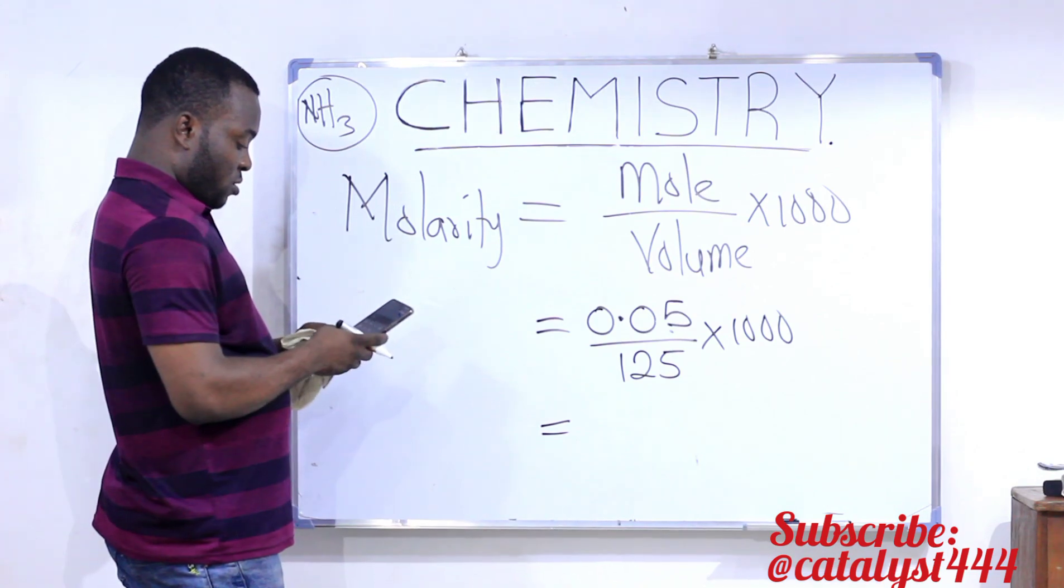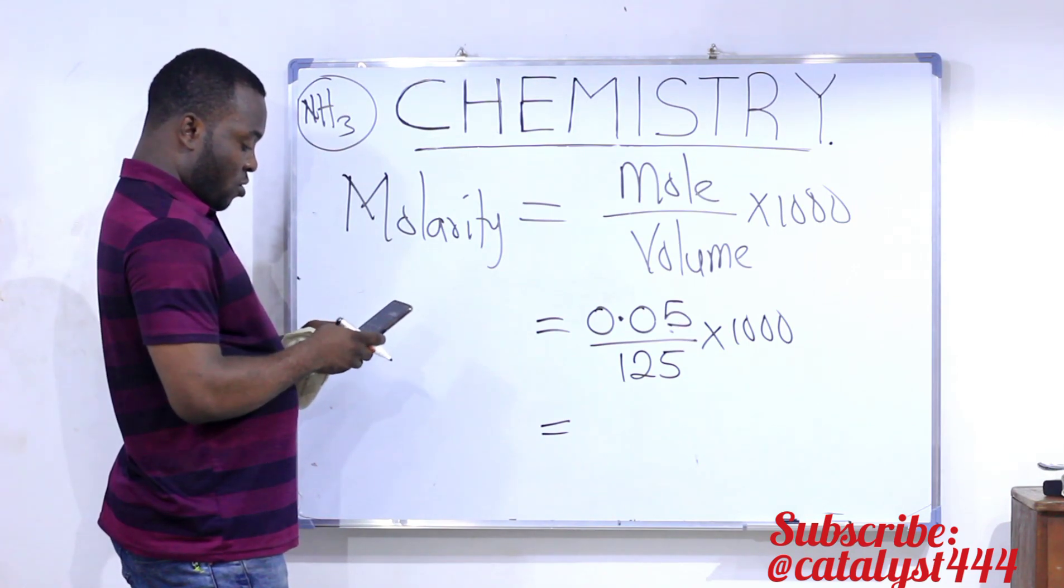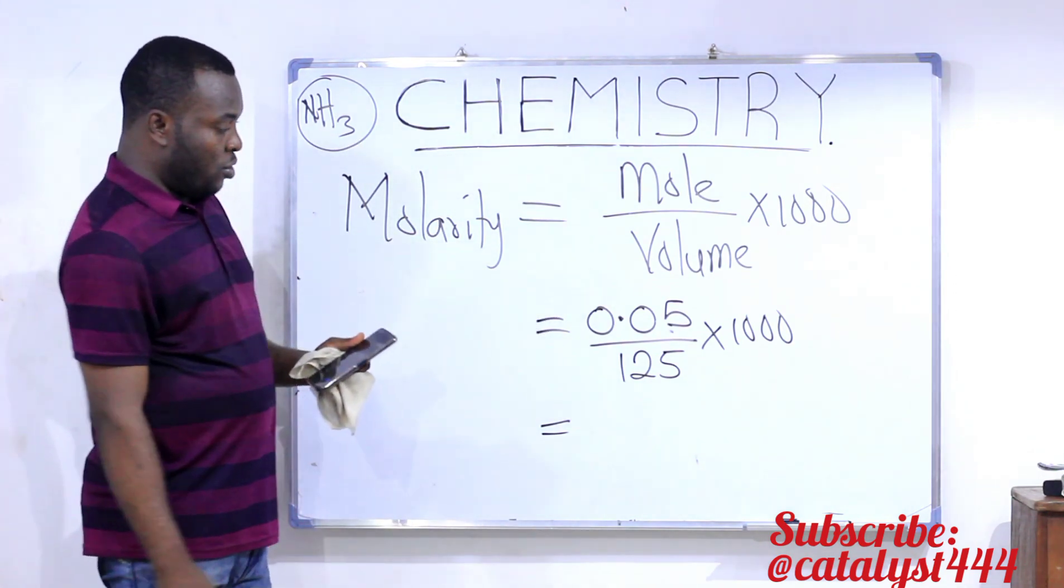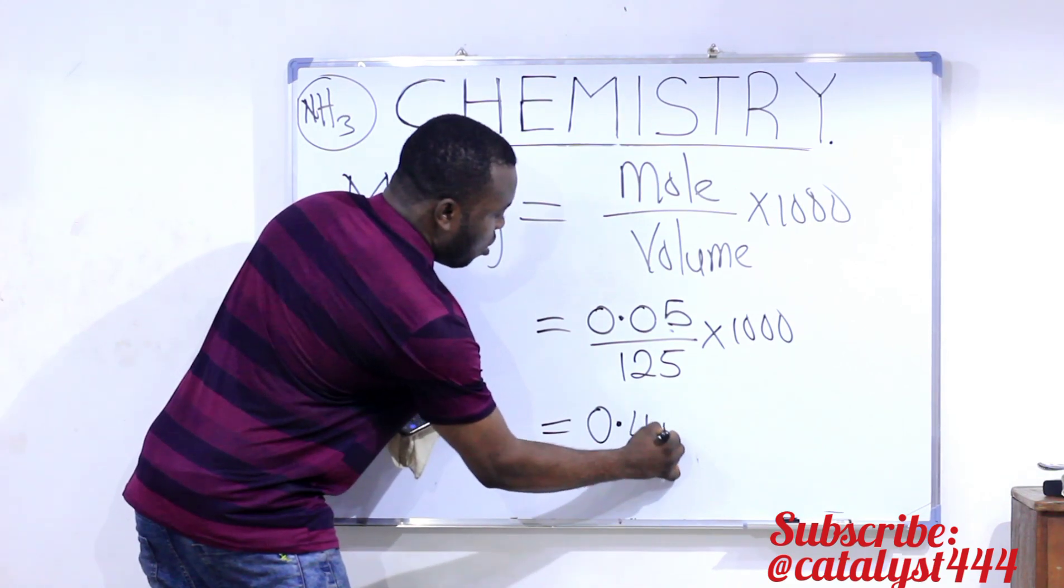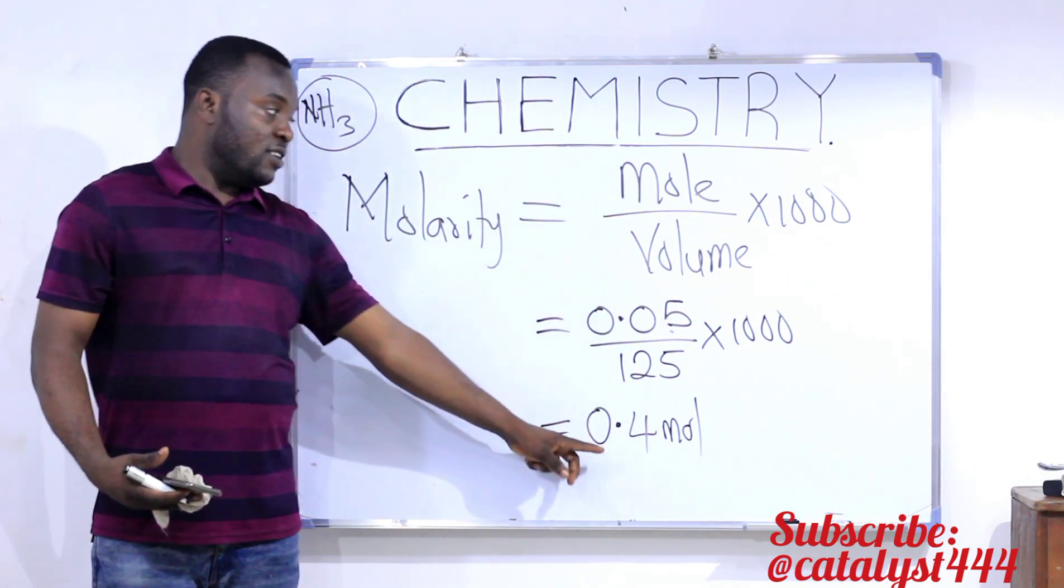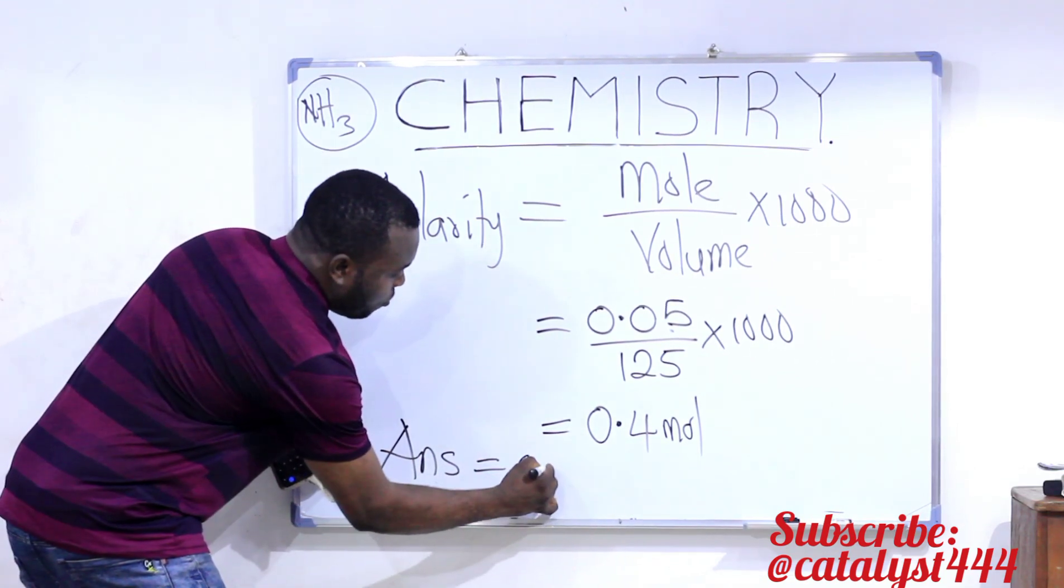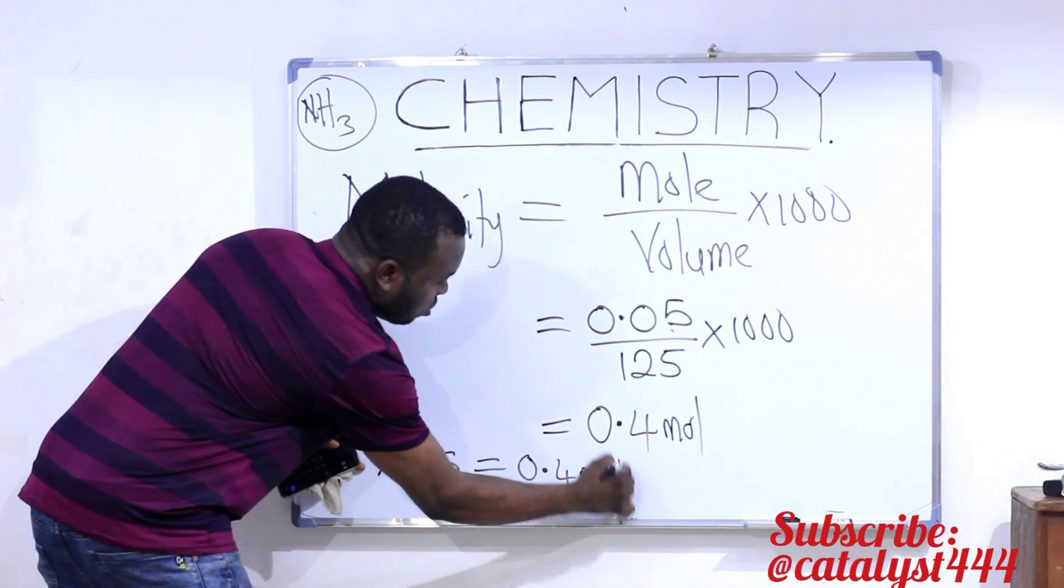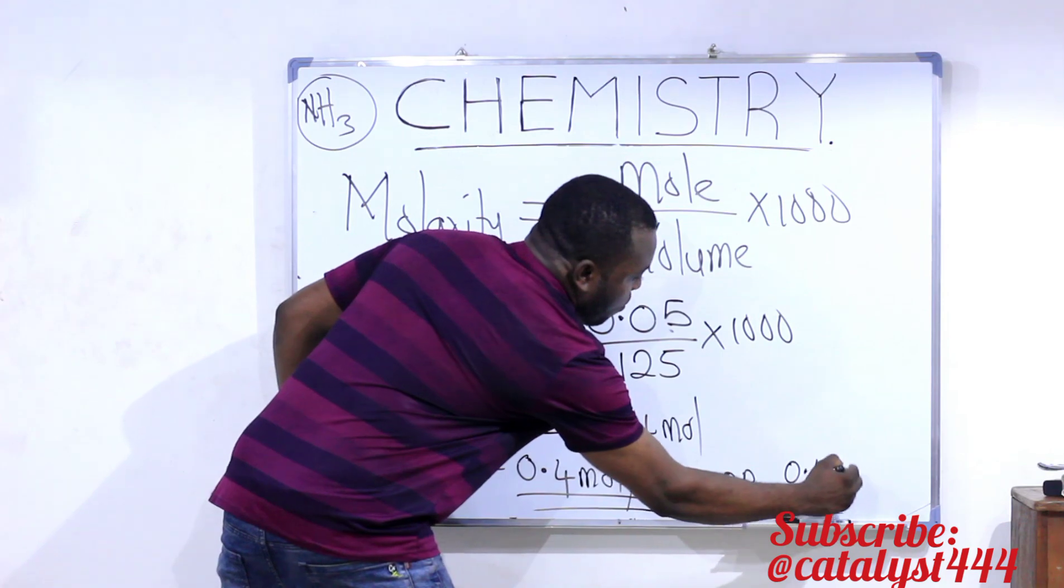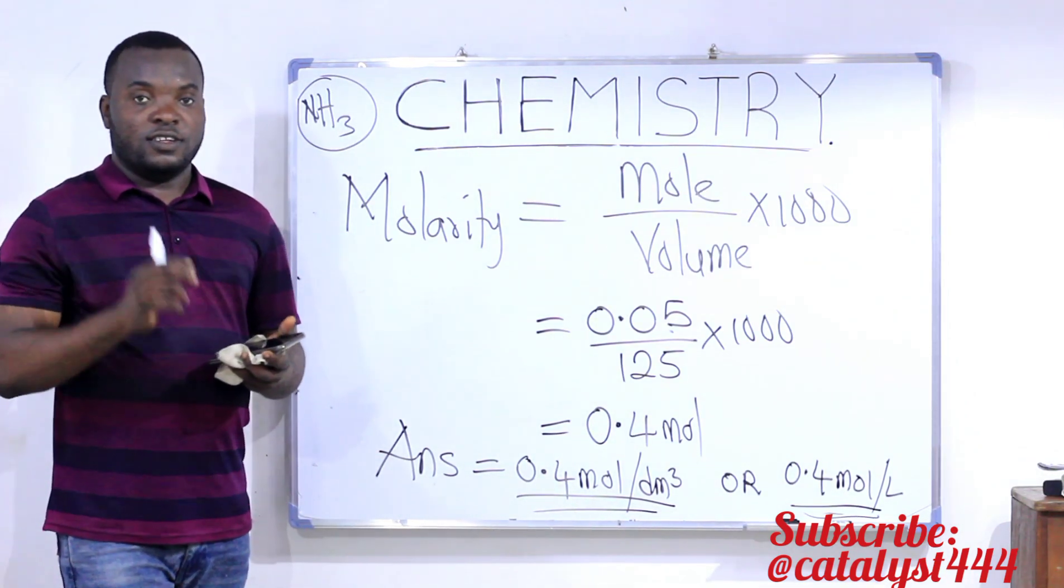So that will give us our final answer to be 0.05 times 1,000 divided by 125. If you punch this on your calculator, you will be having 0.4 mole. Now, this is the number of moles of the ammonia contained in 1 dm³. And that is your answer. So our final answer is equal to 0.4 mole per dm³. Or you can say 0.4 mole per liter. It's the same thing.